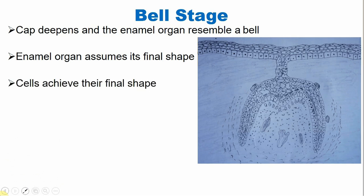Now the cells achieve their final shape. In the late bell stage, the cells will achieve their final form, and we call this histo-differentiation — the cells become finally histo-differentiated.